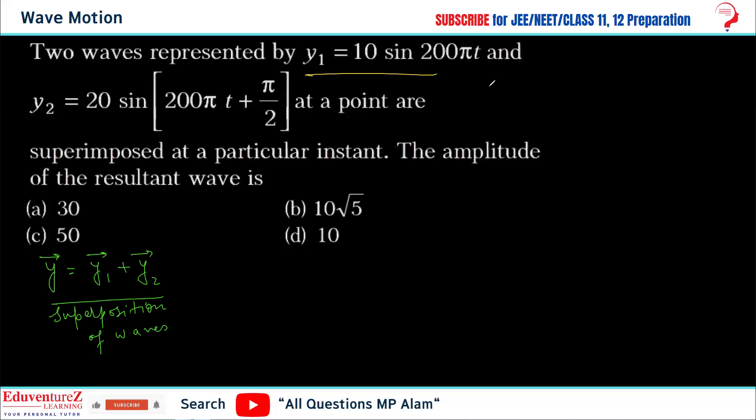Now compare both equations. This equation is in the format y equals a1 sin ωt, and this equation is in the format y2 equals a2 sin(ωt + φ). You can see that one has ωt plus 0 and the other has ωt plus φ. That means the phase angle difference between them is φ, which here is π/2.